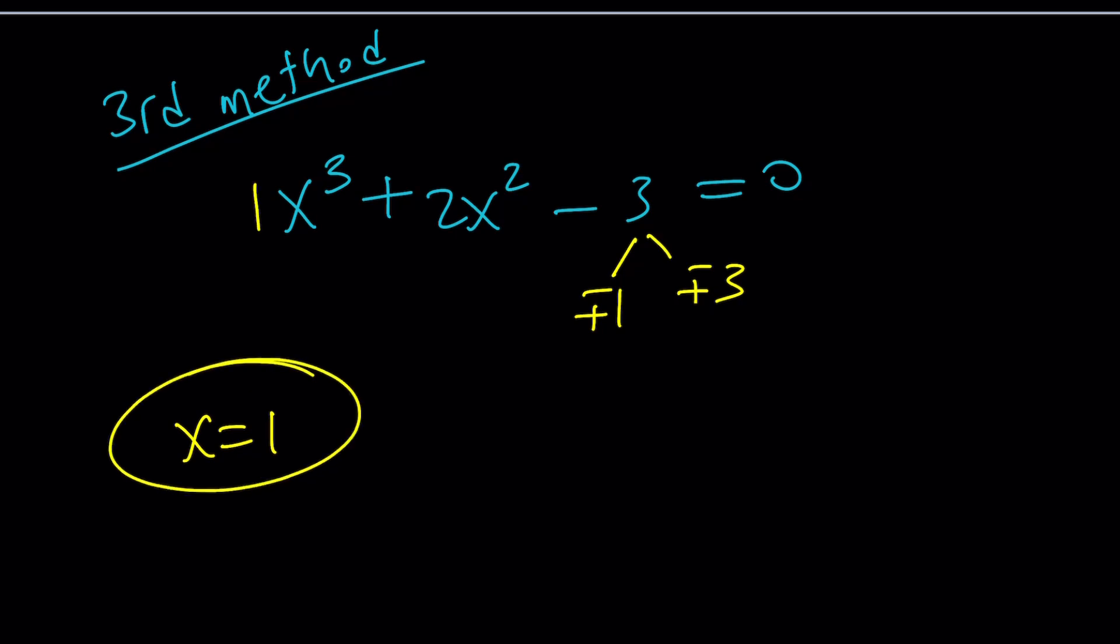Because the sum of the coefficients of this polynomial, if you take a look at it, 1 plus 2 minus 3 is 0. That tells you x equals 1 is a solution, and that tells you x minus 1 is a factor, by factor theorem. Cool.